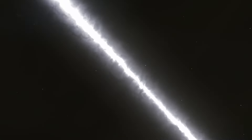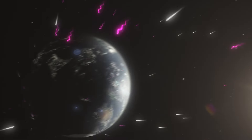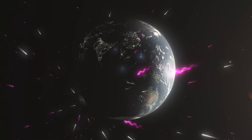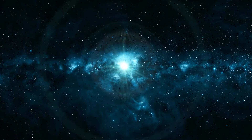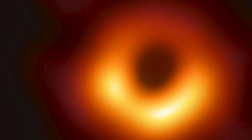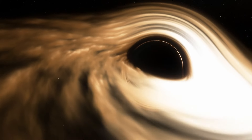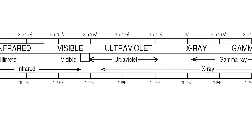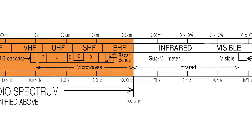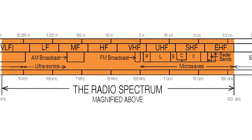What is radio astronomy? Radio astronomy is the observation of naturally occurring radio waves emitted by celestial objects. Radio astronomers study emissions from stars, galaxies, and even black holes.